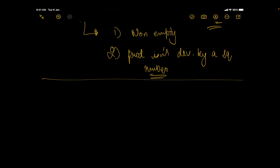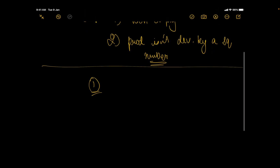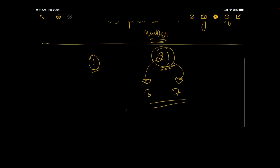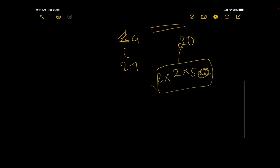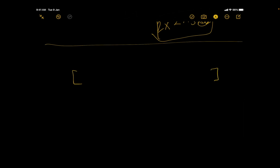Only two things are required to solve this: basic mathematics, and an understanding of prime factorization. Any number can be written as a product of prime numbers. For example, 21 = 3 × 7, 14 = 2 × 7, and 20 = 2 × 2 × 5. So any subset's product can also be expressed as a product of prime numbers.